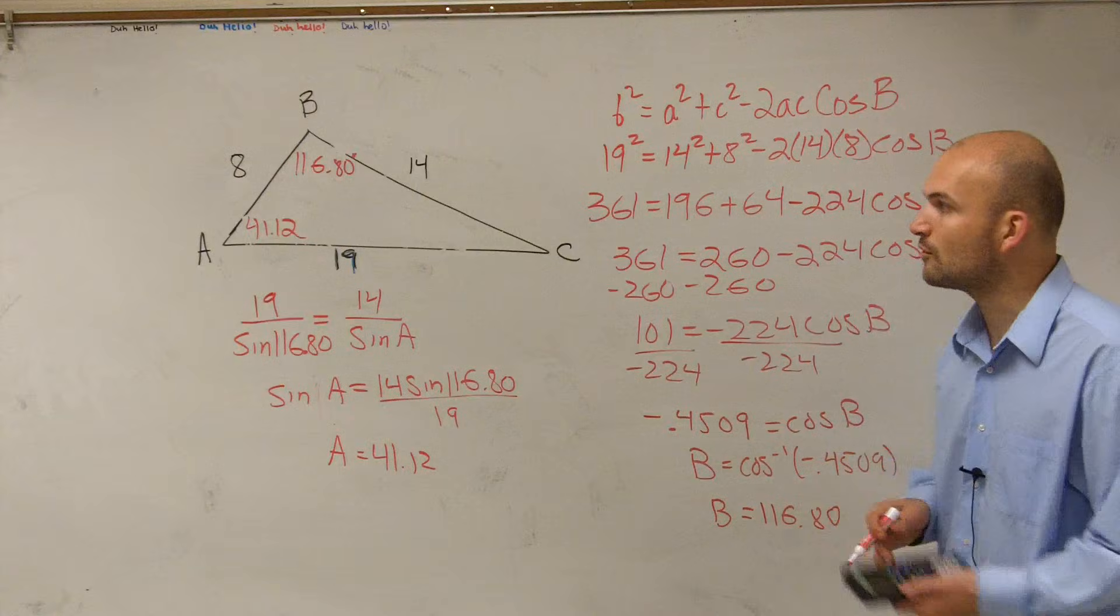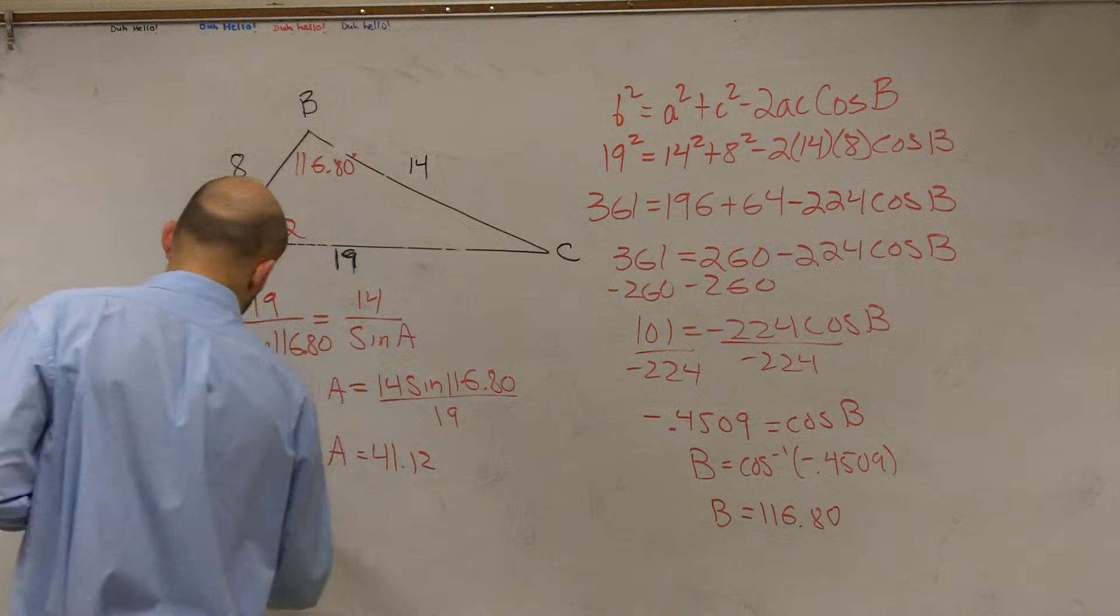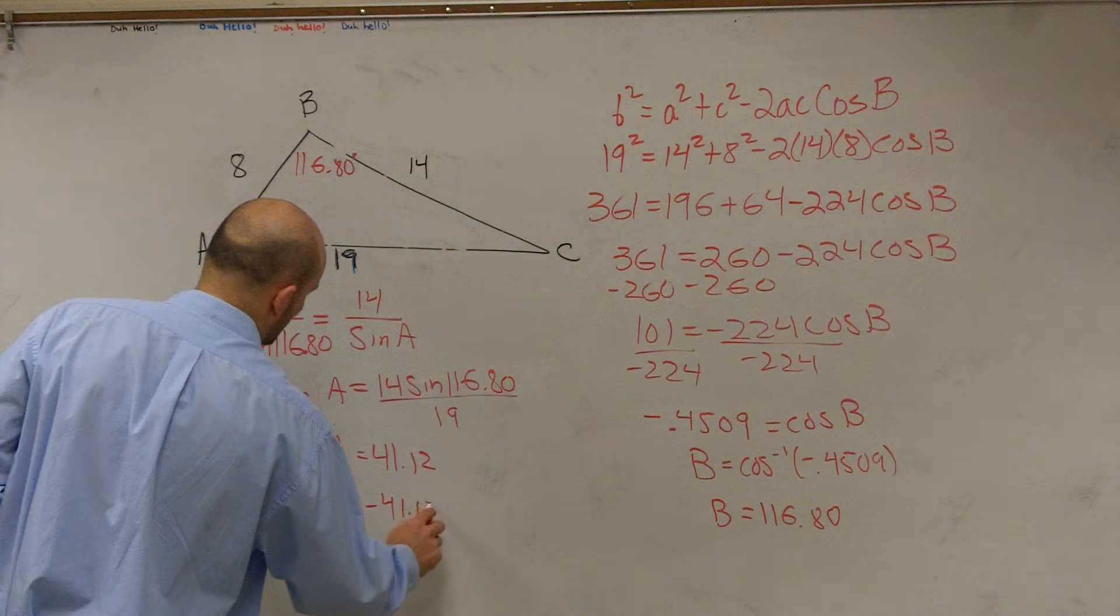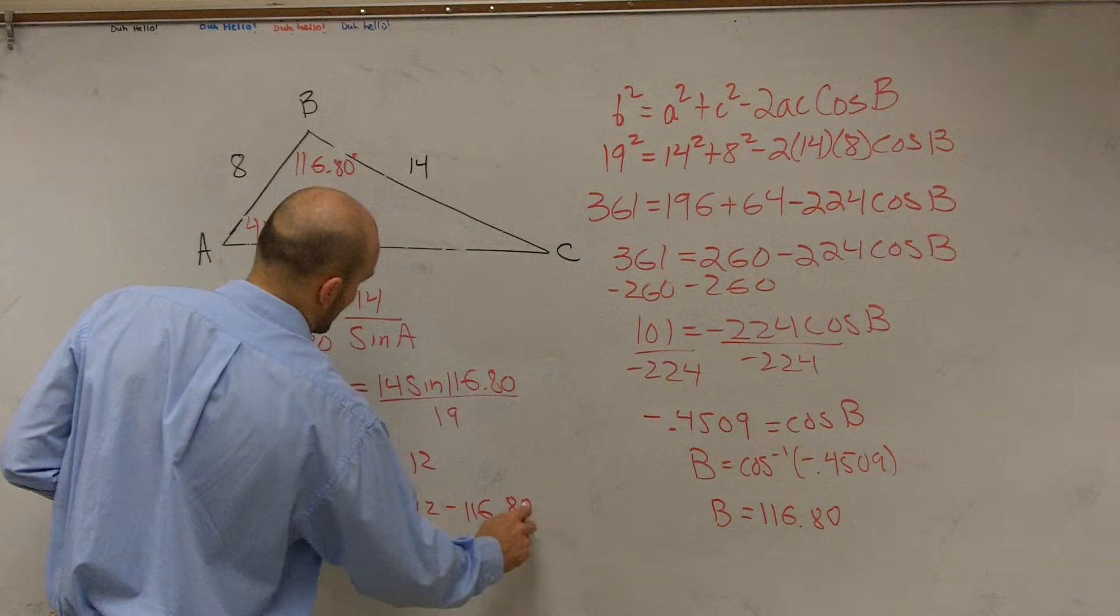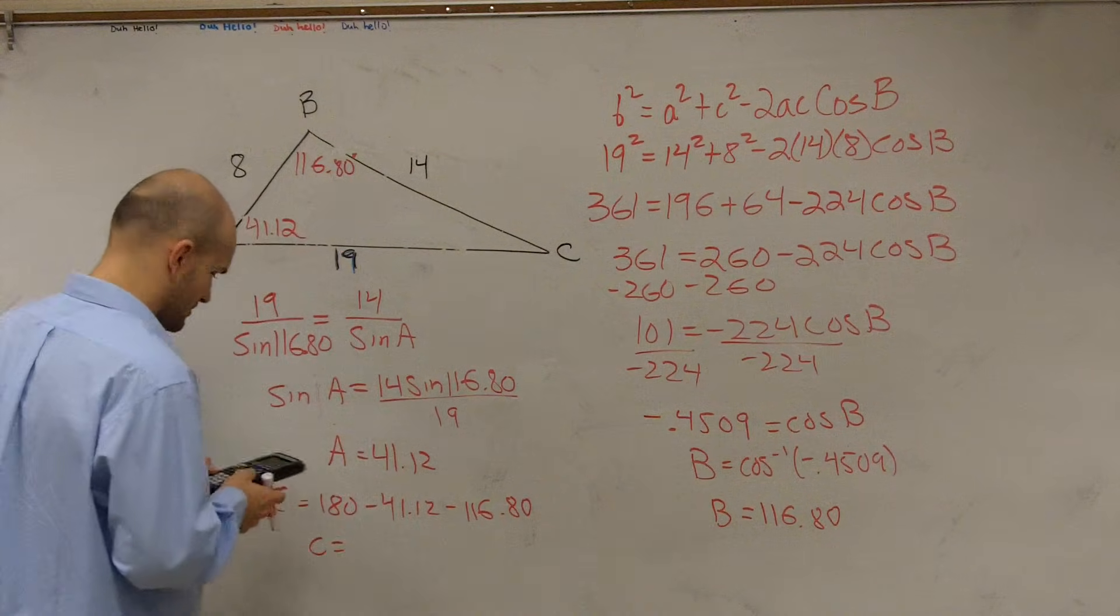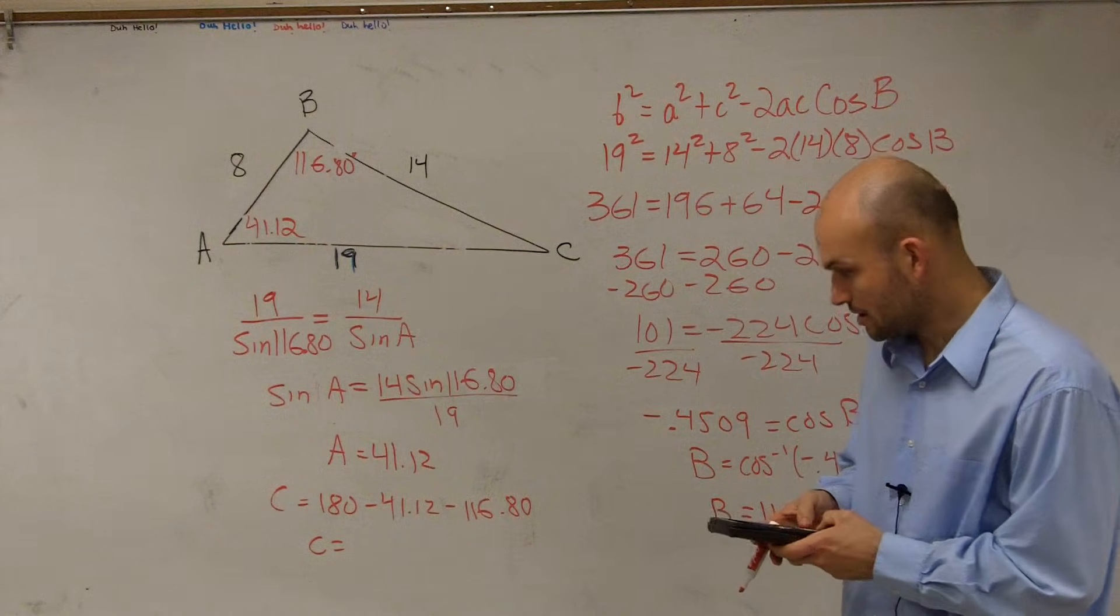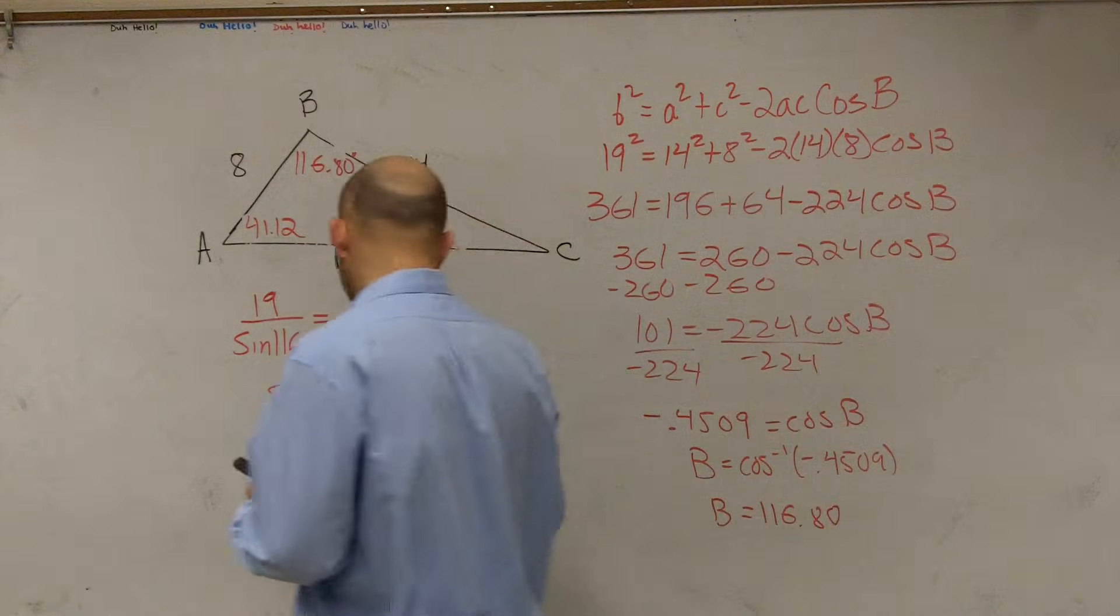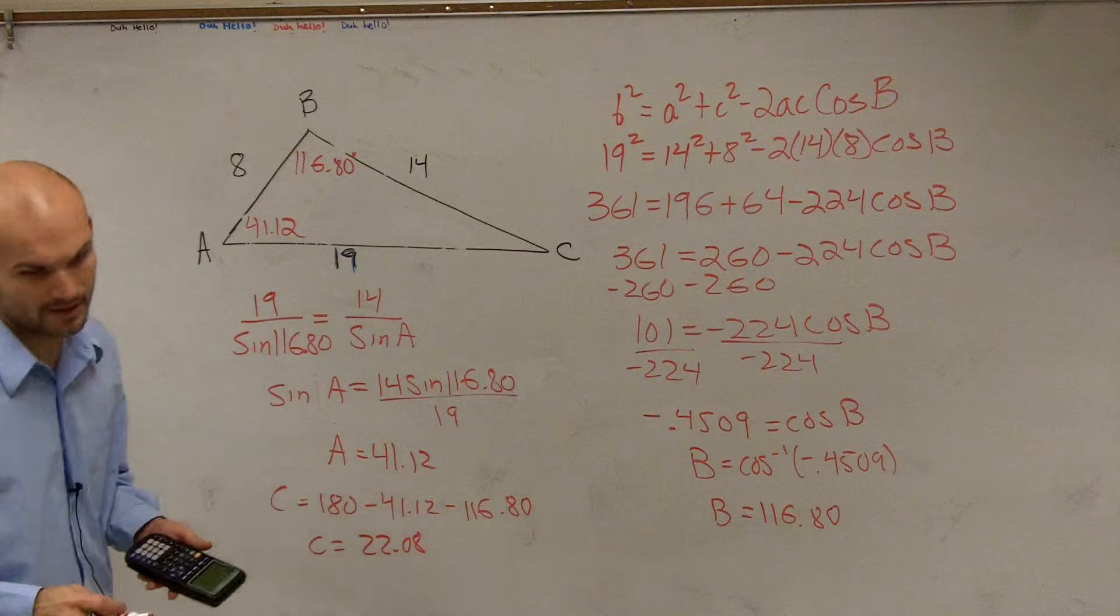Then now our last step, so we know that's 41.12, so now to find angle C, we just need to take 180 minus 41.12 minus 116.80. So you do 180 minus 41.12 minus 116.80 and you get 22.08. There we go.